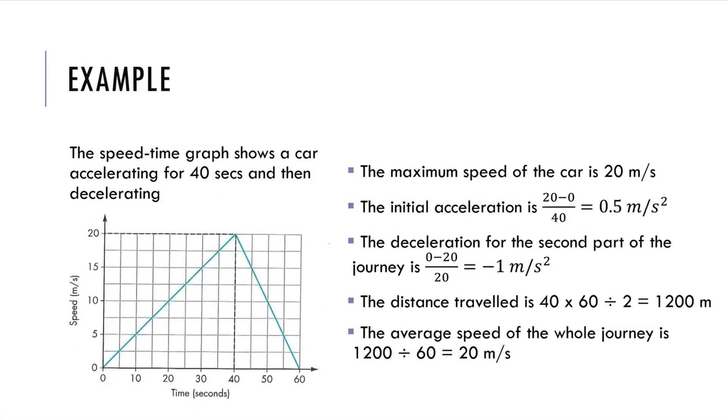We have another example. The Speed Time Graph shows the car accelerating for 40 seconds and then decelerating. As shown in the graph, the maximum speed of the car is 20 meters per second. The initial acceleration is calculated by the final speed minus the initial speed and then over a period of time. It is 0.5 meters per second squared. The deceleration for the second part of the journey is 0 minus 20 over 20, which is minus 1 meter per second squared. The distance traveled is 40 times 60 divided by 2, which is 1200 meters. So, as shown in the graph, we have to calculate the area of the triangle. The average speed of the whole journey is 1200 divided by 60, which is 20 meters per second.